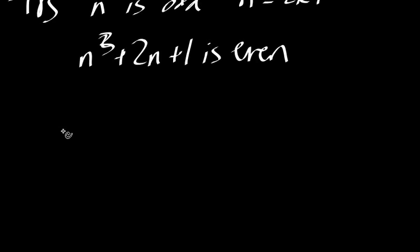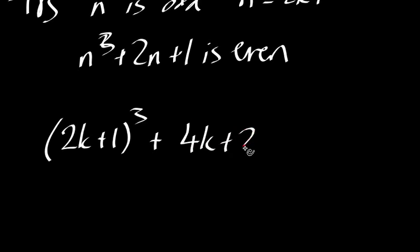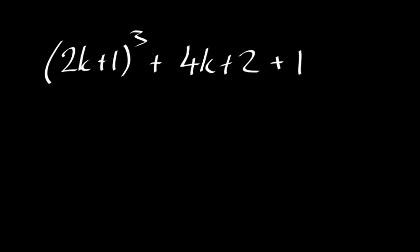So let's start off by a direct substitution. So we can go 2k plus 1 cubed plus 2 times 2k plus 1, which is 4k plus 2 plus 1. We need to show that that is all even. And I've already expanded the 2k plus 1 all cubed, so I'm just going to put that in quickly.